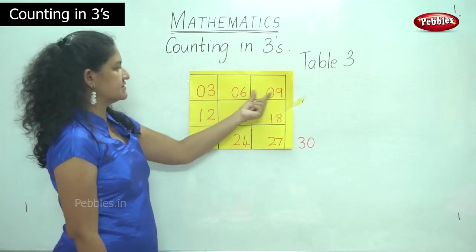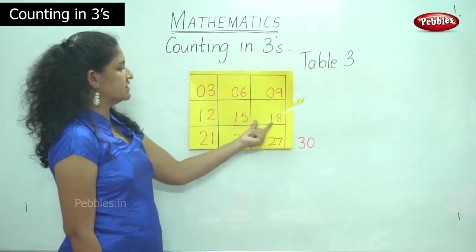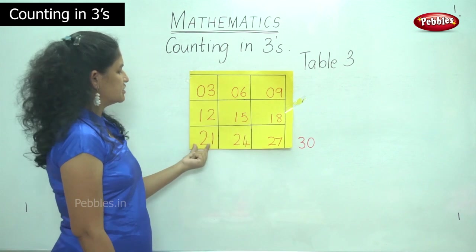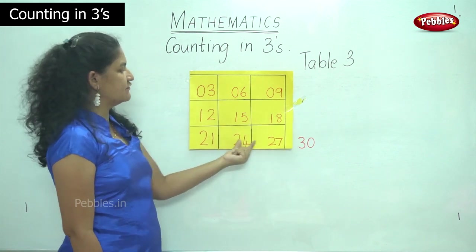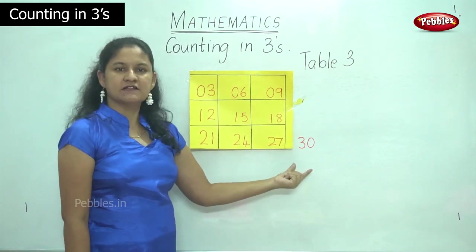So our table 3 reads: 3, 6, 9, 12, 15, 18, 21, 24, 27 and 30.